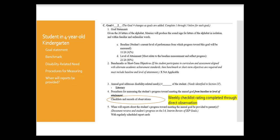Number four are the procedures for measuring the student's progress toward meeting the annual goal from baseline to level of attainment. On the draft, as written here, the original author of this IEP said checklists and records of observation.